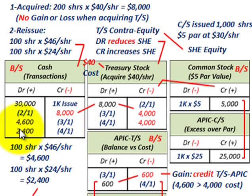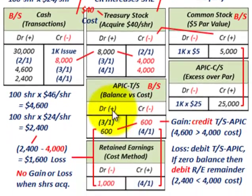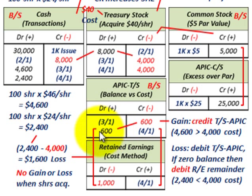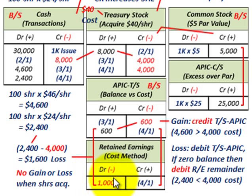We need a balancing entry. We only received $2,400 in cash, and we have a credit reducing our treasury stock by $4,000. We're going to need a debit balance going to additional paid-in capital for treasury stock. In this case, we would debit it for $600 — only the amount sitting in that account from the gain on the first issuance. We debit additional paid-in capital only for the amount sitting there, which brings it to a zero balance. The remaining amount then flows into retained earnings.